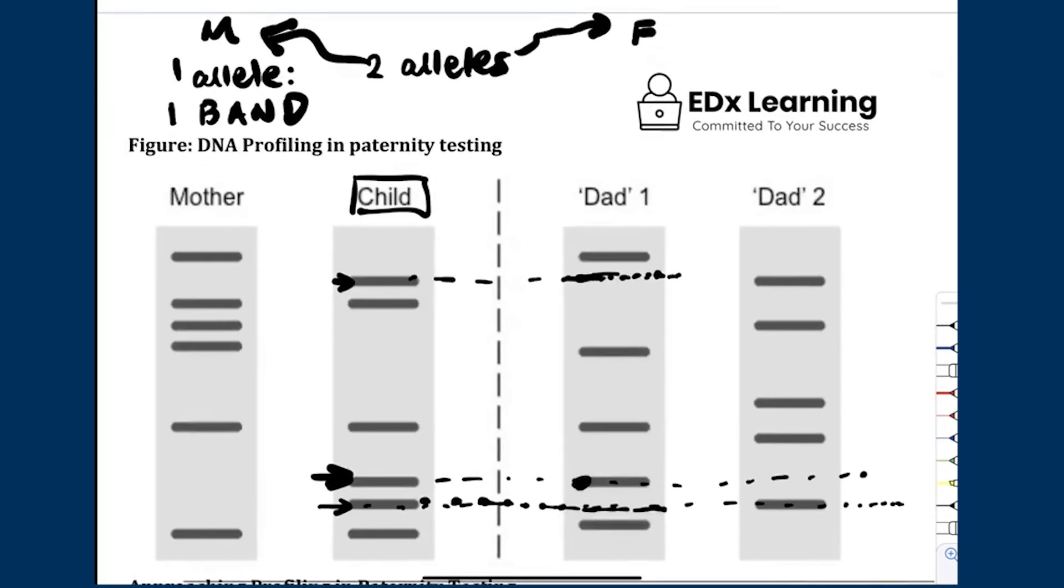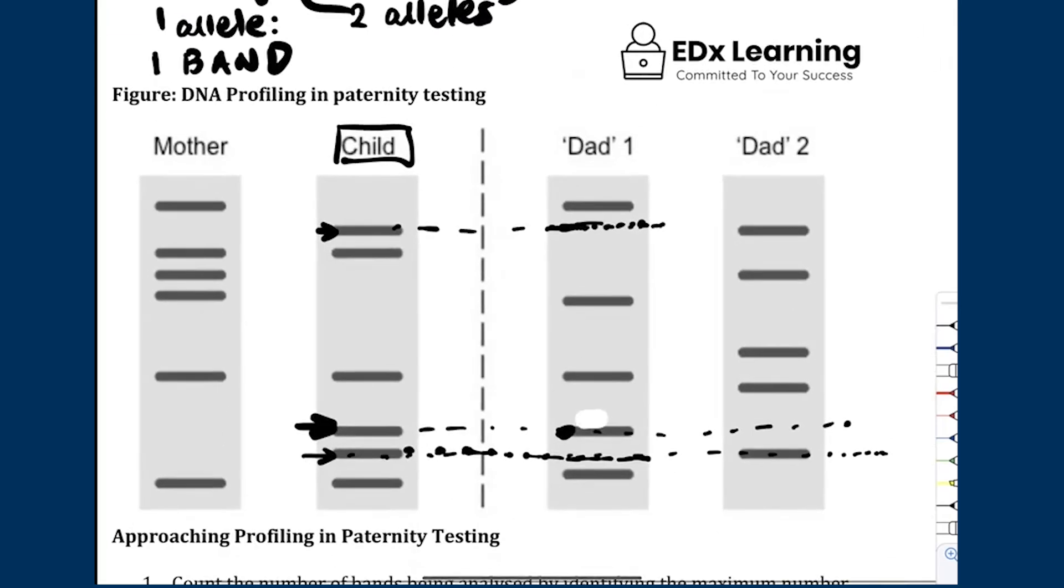And so more than likely, what we see is that all the bands that can't be explained by the mother, specifically this one here, this one here, passed on from Dad 2. The answer to this question, or the best answer—because it's a bit of a difficult one because of that last band here—is that father 2 is most likely the parent of that child.